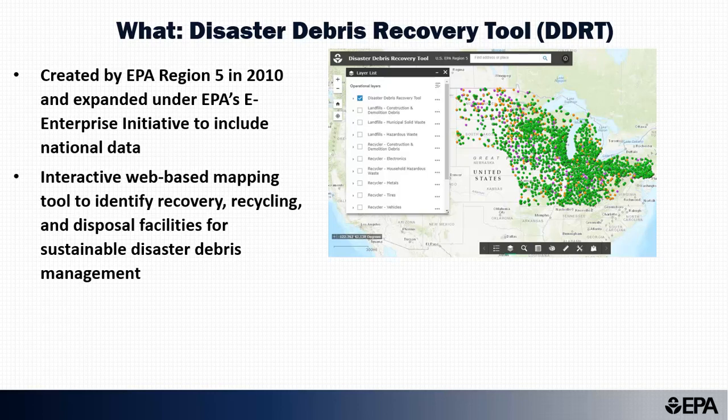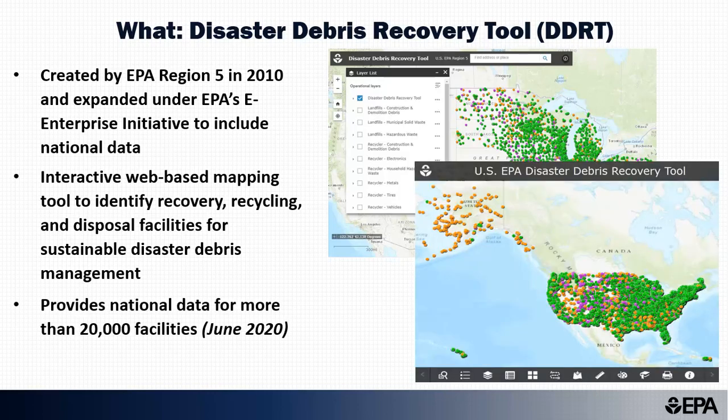Communities can incorporate facility information into their disaster debris management plans. EPA collected publicly available data from state, local, and tribal agencies and trade associations. As of June 2020, the DDRT includes a nationwide data set of more than 20,000 facilities covering all 50 states, Puerto Rico, and the U.S. Virgin Islands.